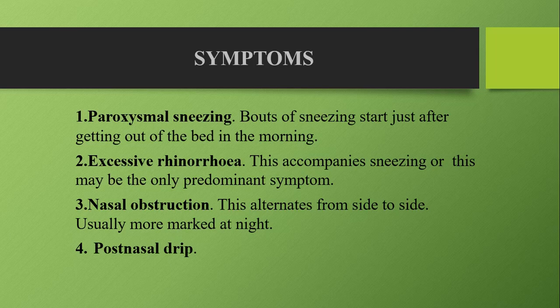Excessive rhinorrhea usually accompanies sneezing, or it can be the only predominant symptom, in which case the nasal discharge is watery and profuse. Vasomotor rhinitis can also be associated with nasal obstruction that alternates from one side to the other and is more marked on the dependent side.